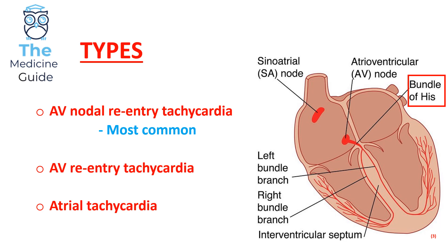There are different types of supraventricular tachycardia and all of these vary in terms of their specific origins. For completion, the different types include AV nodal re-entry tachycardia, AV re-entry tachycardia, and atrial tachycardia. It's important to be aware that AV nodal re-entry tachycardia is the most common form.